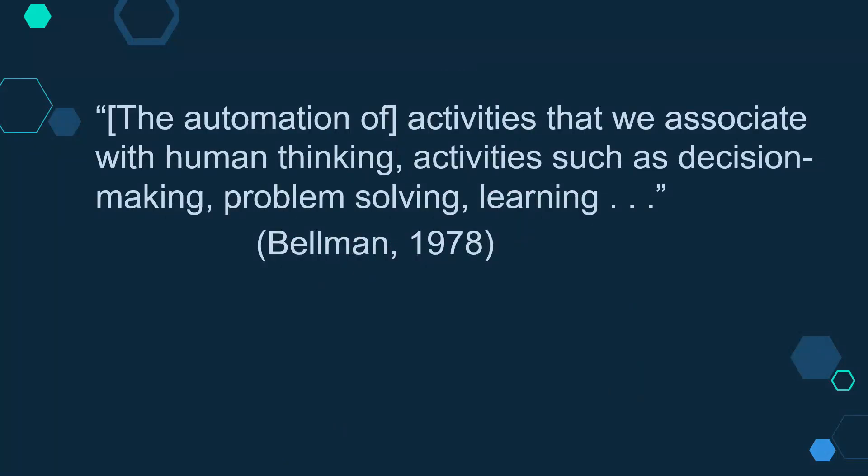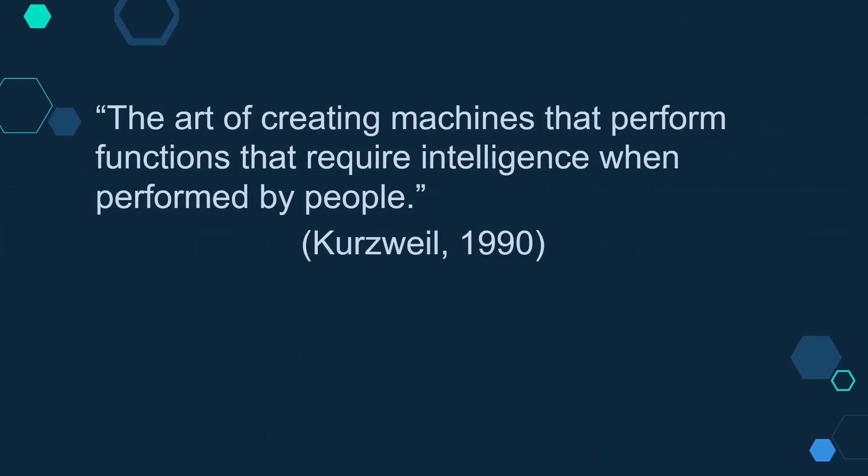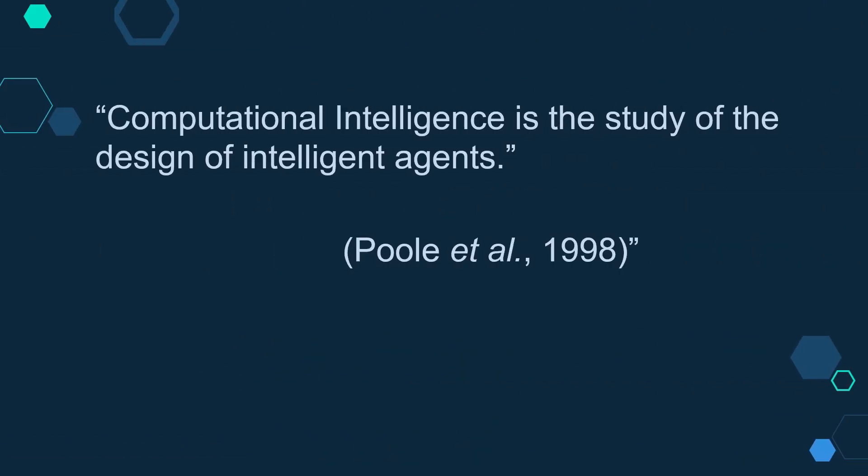Artificial intelligence is not a new concept. We can see some of the evolved definitions during the course of time: the automation of activities that we associate with human thinking, activities such as decision making, problem solving, learning, etc. In another definition, the art of creating machines that perform functions that require intelligence when performed by people. Poole et al. in 1998 defined computational intelligence as the study of the design of intelligent agents.